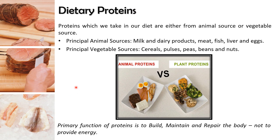Dietary proteins come from animal or vegetable sources. Principal animal sources are milk and meat, while the principal vegetable sources are cereals, pulses, and nuts. The primary function of proteins in our diet is to build, maintain, and repair the body. For energy-yielding purposes, dietary proteins should not be used as the main source; main source of energy should come from carbohydrates and fats.